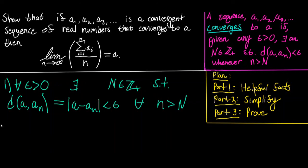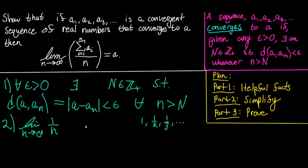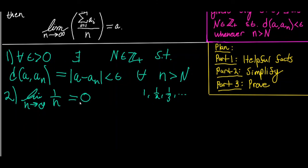Helpful fact 2: The limit as n goes to infinity of 1 over n — that is, the sequence 1, one-half, one-third, and so on — is equal to zero. Rephrasing: for any epsilon strictly greater than zero, there exists an N in the positive integers such that 1 over N is strictly less than epsilon. Another way of saying this is there exist arbitrarily small rational numbers.